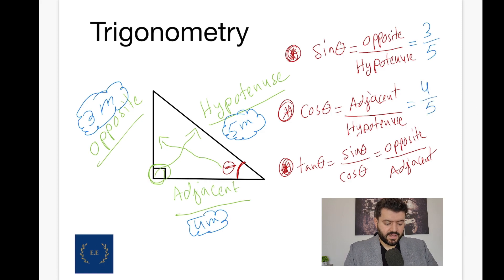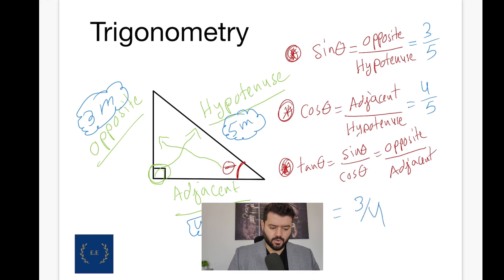Now, tangent of theta equals to sine of theta divided by cosine of theta, which equals to the opposite divided by the adjacent. So, this is the opposite side. This is the adjacent side. Which means we have 3 over 4.